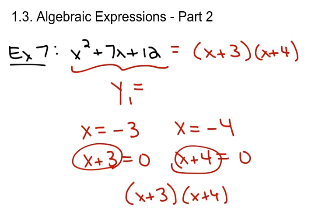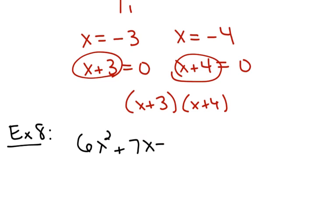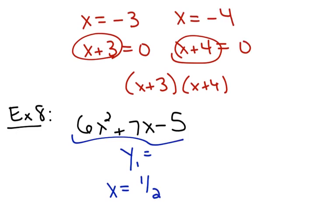Now I could do the exact same thing for problem 8, which was 6x squared plus 7x minus 5. I would graph it in y1 equals, and then hit graph. What you're going to notice is that it looks like the graph hits the x-axis at about 1 half. And then the other one — well, maybe hard to tell.